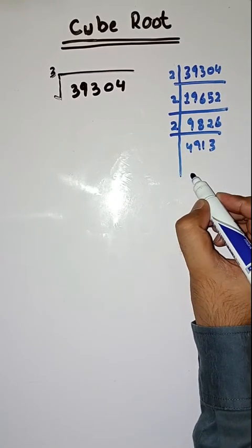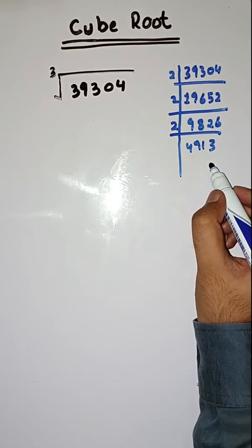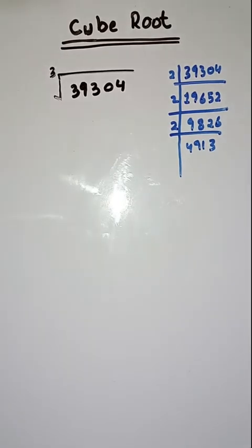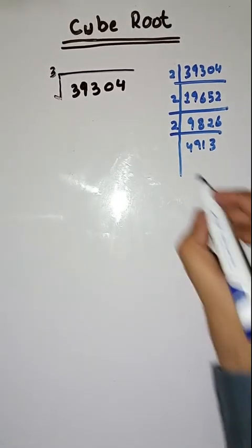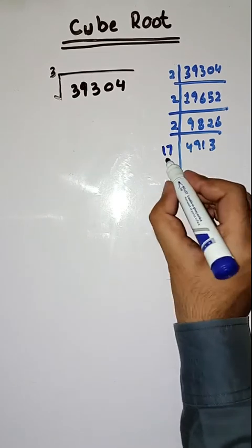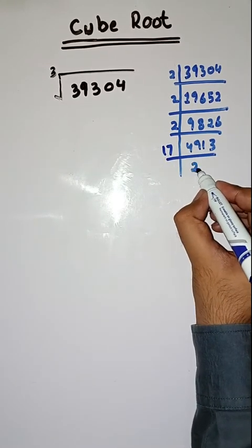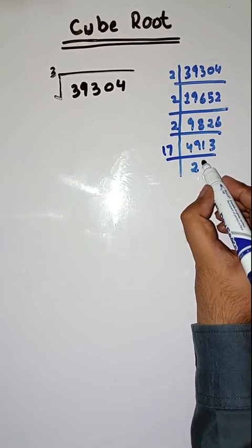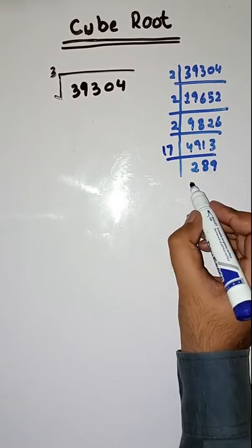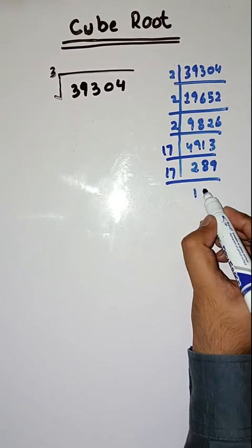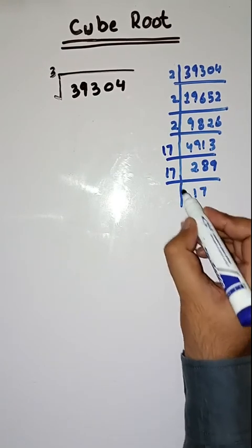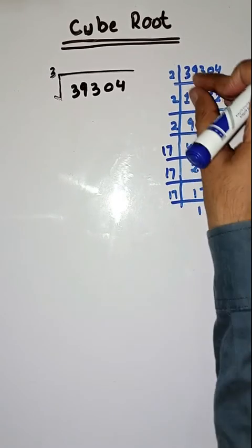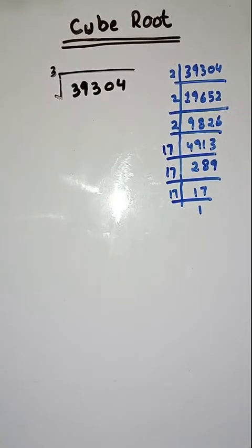And now with 17. We divide by 17: 17 times 2 are 34, then 17 times 17 are 289, and again with 17, 17 times 1 are 17. So here are the prime factors of 39304.